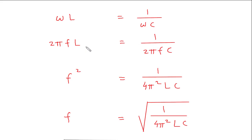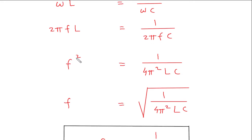Now from this, if we take 2πL to the right side, this will be 4π². And if we take F to the left side, this will be F². So F² is equal to 1 upon 4π² into LC.